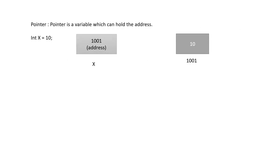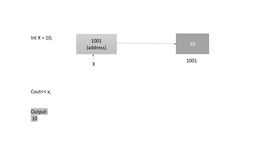First, let us look into the concept of pointers. A pointer is a variable that holds the address. Let us say x is a variable that holds a value 10. Basically, what happens internally is x will hold a memory address location. In the memory location 101, the value 10 will be stored. This memory location will be stored in a lookup table of x. So when you retrieve a value of x, it searches in the table where it has to take the original value. It sees 101, so it searches for location 101, fetches the value 10, and displays it.